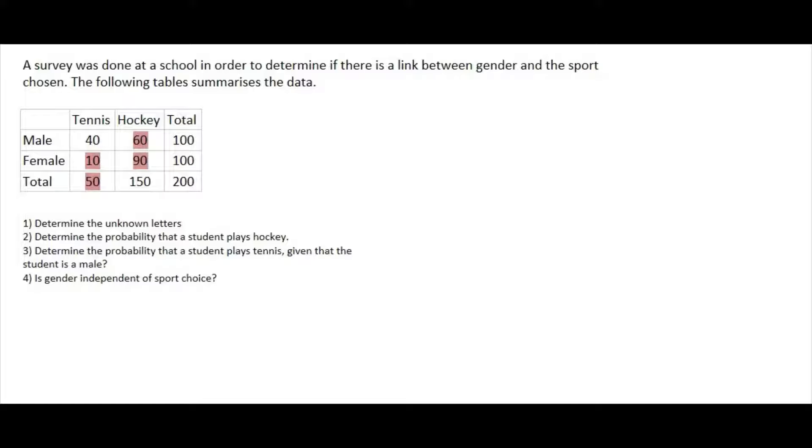Determine the probability that a student plays hockey. Well, out of a total of 200 people, we could say 60, but that would only be the male hockey players. 90 of them, 90 females play hockey. But if we just look at the hockey total, it's 150. So there are 150 out of 200 people who play hockey. You type that in on your calculator, and it will simplify it for you as 3 out of 4.